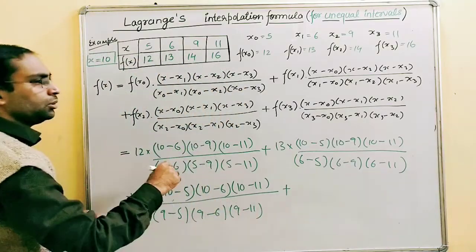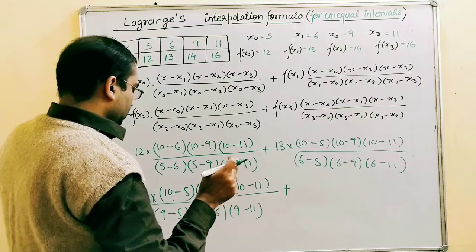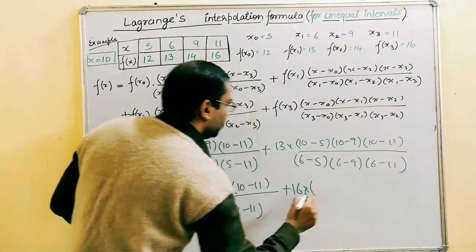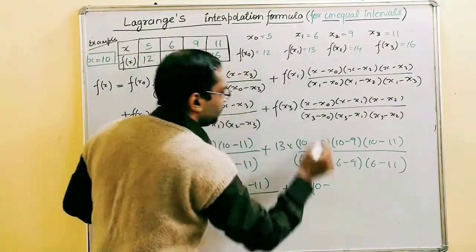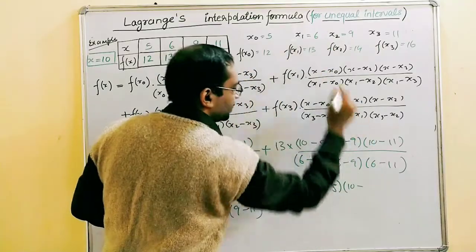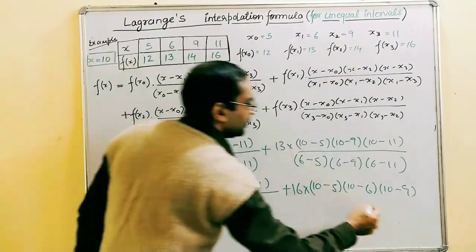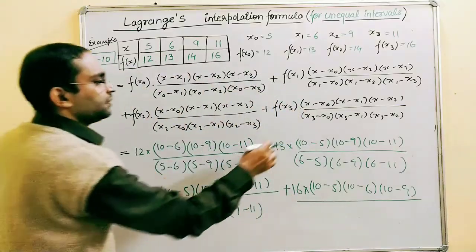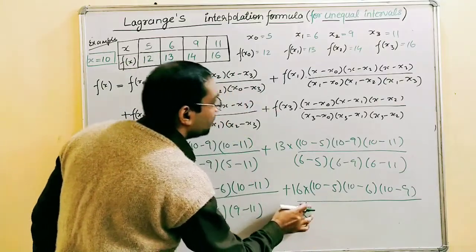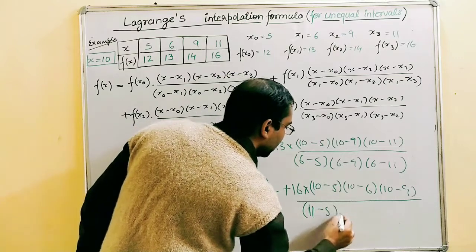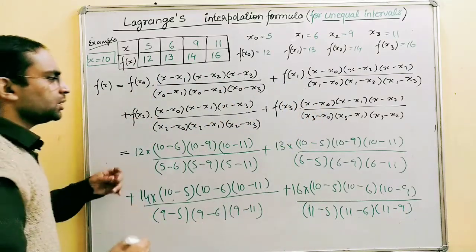The last term: f(x₃) = 16. Numerator: (10 − 5)(10 − 6)(10 − 9) — skipping (10 − x₃). Denominator: (11 − 5)(11 − 6)(11 − 9). This completes the substitution of all values into the formula.